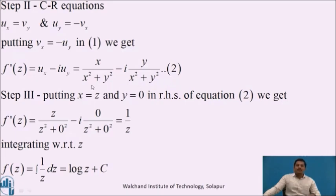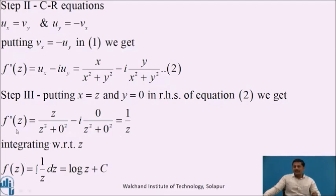Our aim is to convert the right-hand side of equation 2 to a function of z. We substitute x = z and y = 0: f'(z) = z/(z² + 0²) − i·0/(z² + 0²), which simplifies to 1/z. We have now obtained the right-hand side as a function of z.